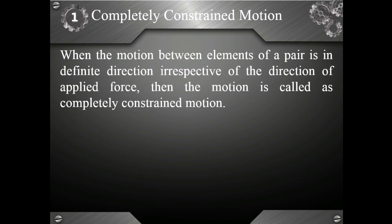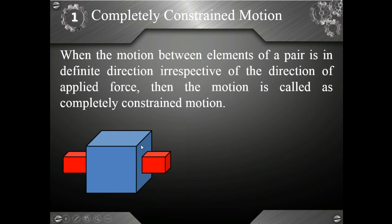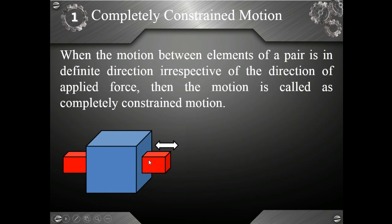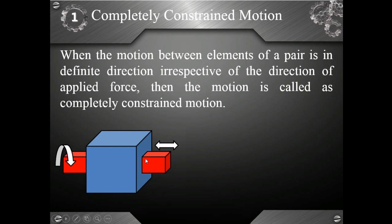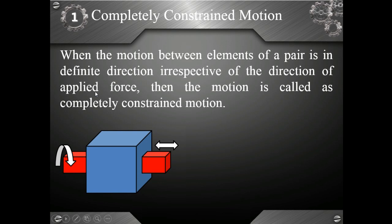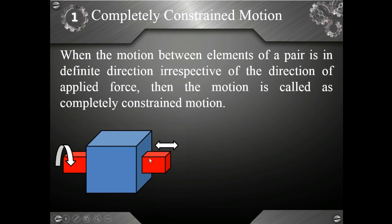To understand this definition better, let us look at some examples. In the first example, we have a cube with a square hole, and inside that square hole we have a square bar. When we apply a linear force to this bar, it can easily slide inside or outside of the cube. But on application of a twisting load or rotation, this bar cannot rotate inside the cube. This means it has only a definite direction of motion — in this case, linear motion — irrespective of the direction of applied force.